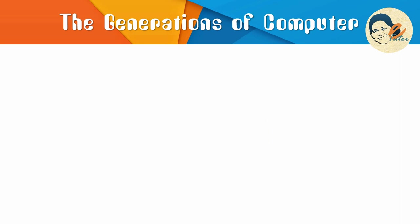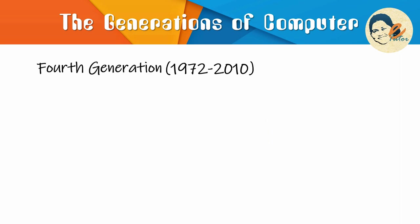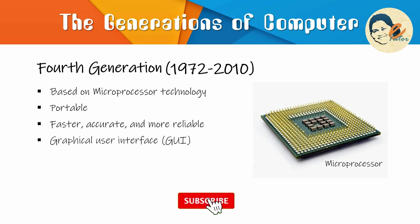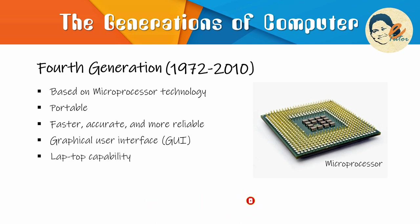Now the fourth generation of computers. The period 1972 to 2010 is approximately considered as the fourth generation. This technology is based on microprocessor technology. By the fourth generation, computers became very small in size and more portable, much faster, accurate and more reliable. Other major advances during this period were the graphical user interface, or GUI. Also, laptop capability and handheld devices offered more comfort to the user in this generation.